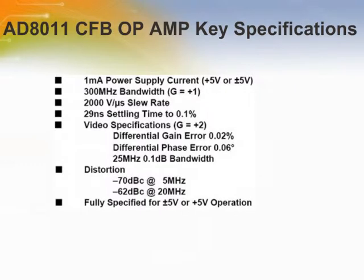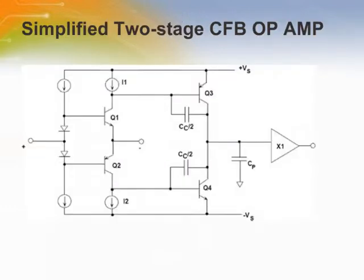The AD8011 CFB op-amp represents state-of-the-art performance, and key specifications are shown. Traditional current feedback op-amps have been limited to a single gain stage using current mirrors. The AD8011, unlike traditional CFB op-amps, uses a two-stage gain configuration. Until now, fully complementary two gain stage CFB op-amps have been impractical because of their high power dissipation. The AD8011 employs a second gain stage consisting of complementary amplifiers Q3 and Q4, connected as grounded emitters. The detailed design of current sources I1 and I2 and their respective bias circuits are the key to the success of the two-stage CFB circuit.